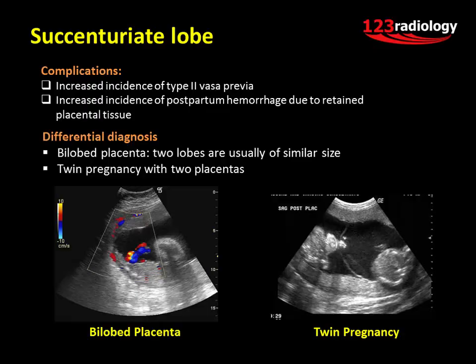The differential diagnosis includes bilobed placenta, in which the two lobes are usually of similar size, and twin pregnancy with two placentas.